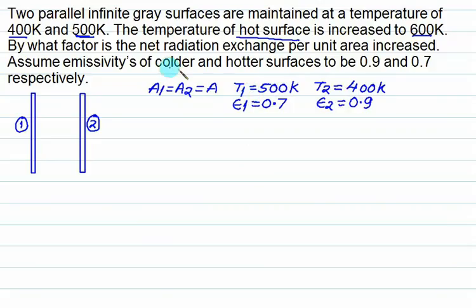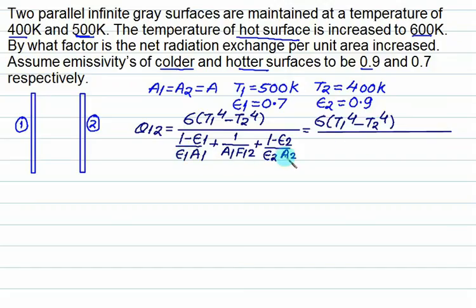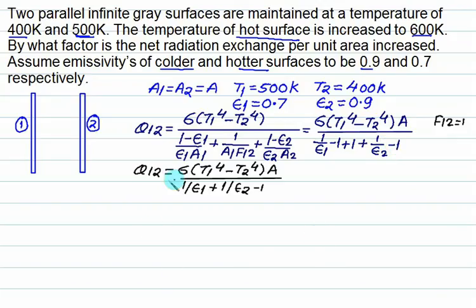For infinite parallel plates, the radiation heat transfer formula simplifies to Q12 = sigma × (T1^4 - T2^4) × A / (1/epsilon_1 + 1/epsilon_2 - 1). This is derived by noting A1 = A2 and F12 = 1, which allows all area terms to simplify. The denominator becomes 1/epsilon_1 + 1/epsilon_2 - 1. Remember this equation for quick calculation with flat parallel plates.